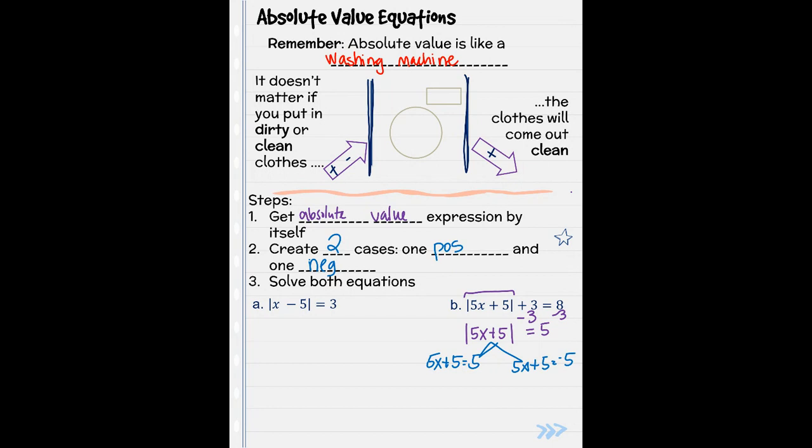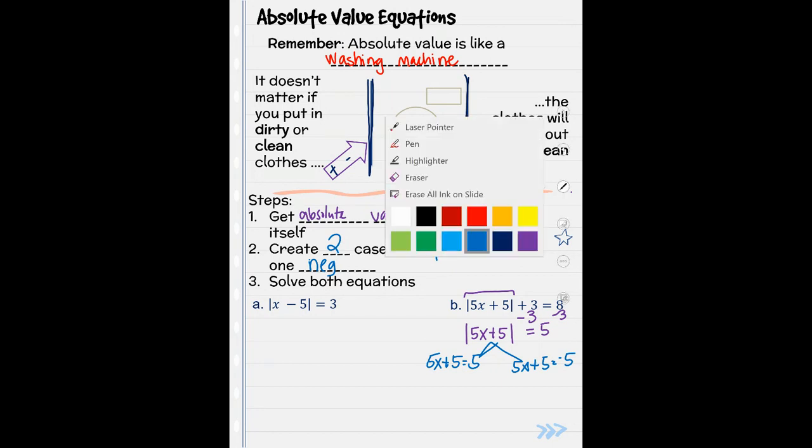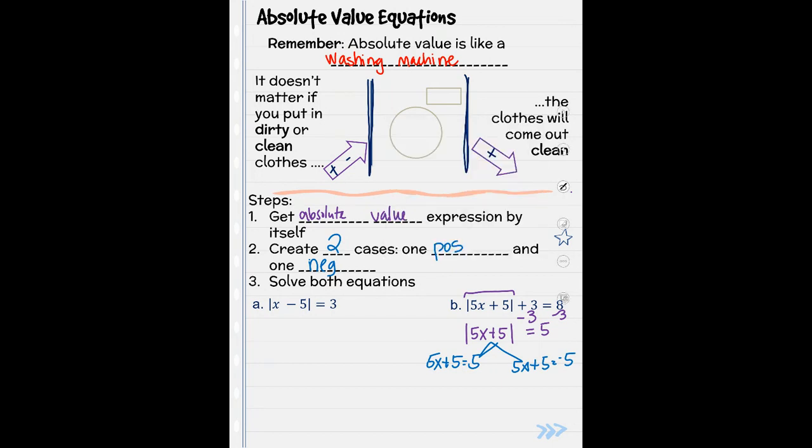Now I'm going to solve both. So 5x plus 5 equals 5. So 5x equals 5 minus 5 is 0. Now I need to divide both sides by 5. So 5x divided by 5 equals 0 divided by 5. Now I want you to write this somewhere and I need you to keep it forever.